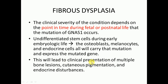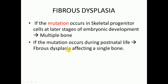When osteoblasts carry the mutated gene, it will lead to multiple bone lesions. The melanocytes carrying the mutation will lead to cutaneous pigmentation, and since endocrine cells are also affected, there will be endocrine disturbances as well. If mutations occur in skeletal progenitor cells at later stages of embryonic development, it will lead to multiple bone fibrous dysplasia, also known as polyostotic fibrous dysplasia.